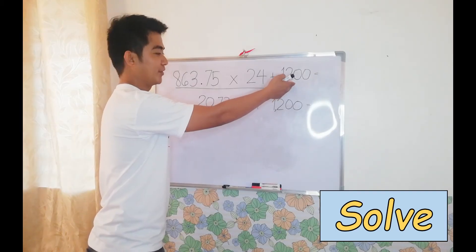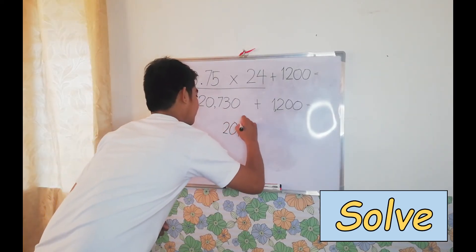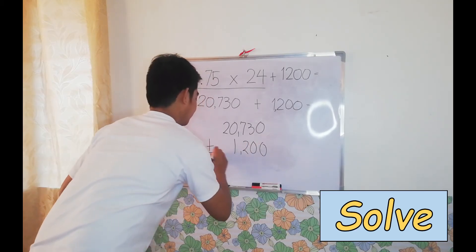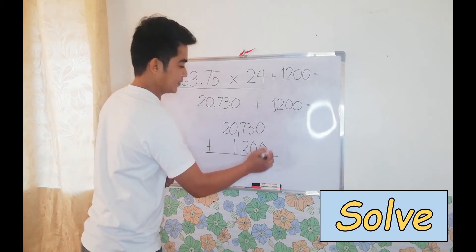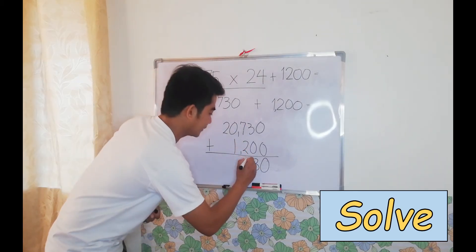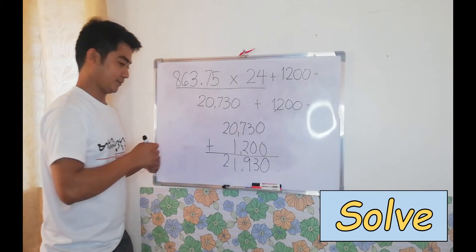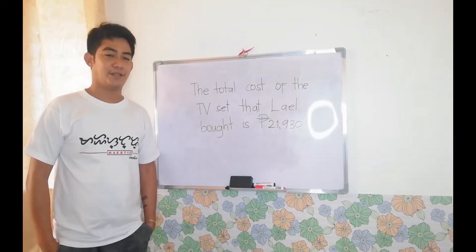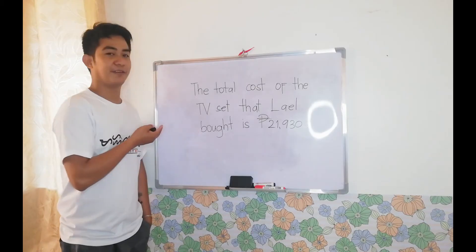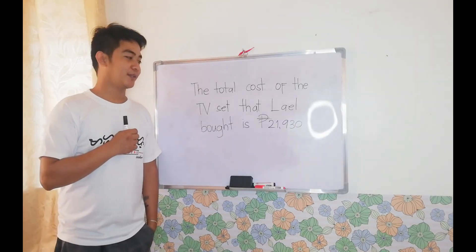Now we continue our number sentence and add 1,200. 0 plus 0 equals 0. 3 plus 0 equals 3. 7 plus 2 equals 9. 0 plus 1 equals 1. Bring down. After applying all the steps in solving our word problem, we arrive at our final answer: the total cost of the television set that Lael bought is Php 21,930.